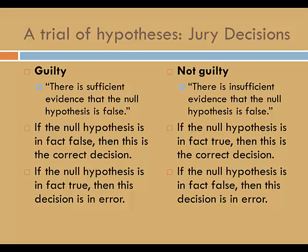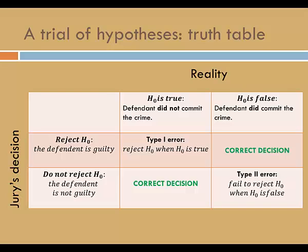Here is a truth table that crosses the possible jury decisions with reality. Along the left-hand side, we see the two possible jury decisions. If they reject the null hypothesis, the jury's decision is that the defendant is guilty. If the jury does not reject the null hypothesis, it is the jury's opinion that the defendant is not guilty. Regardless of the jury's decision, the null hypothesis is either true or false. If the null hypothesis is true, the defendant did not commit the crime. If the null hypothesis is false, the defendant did commit the crime.